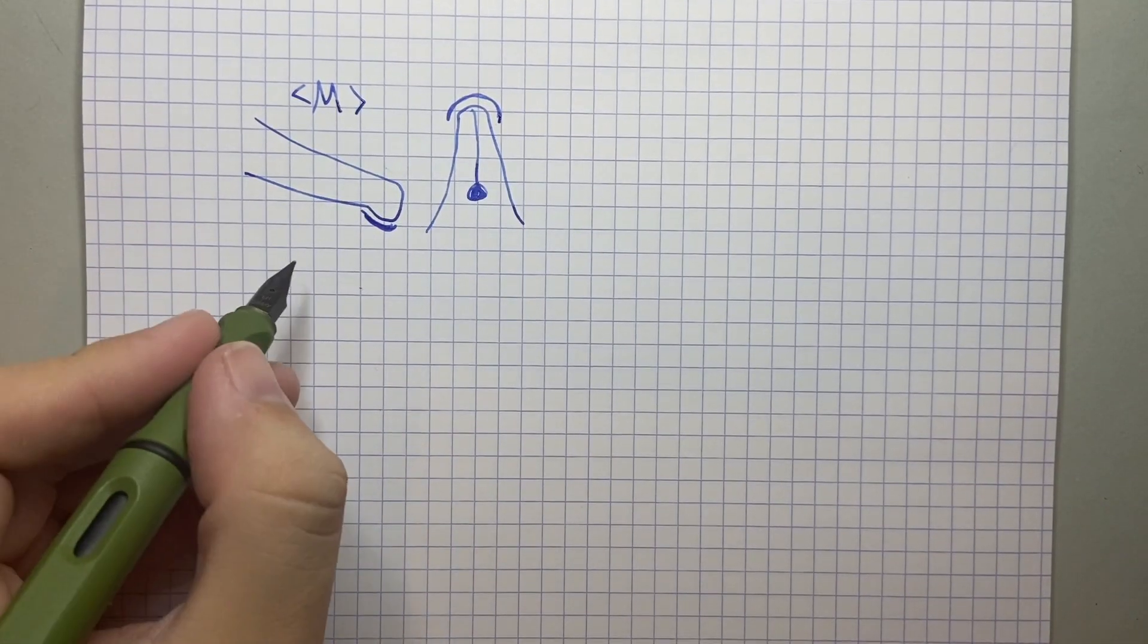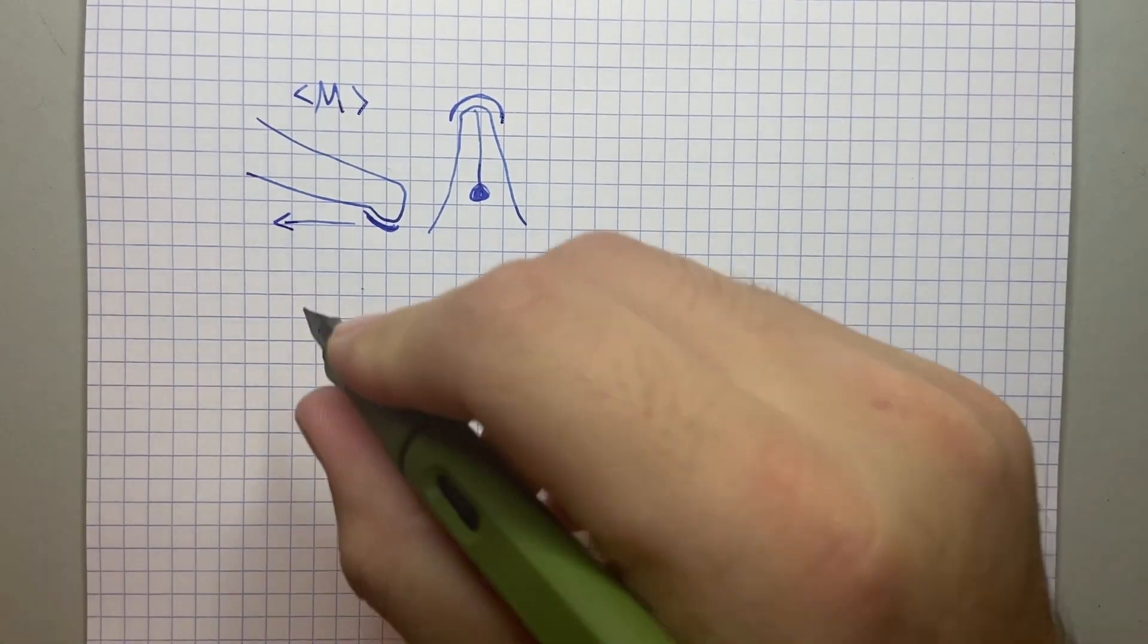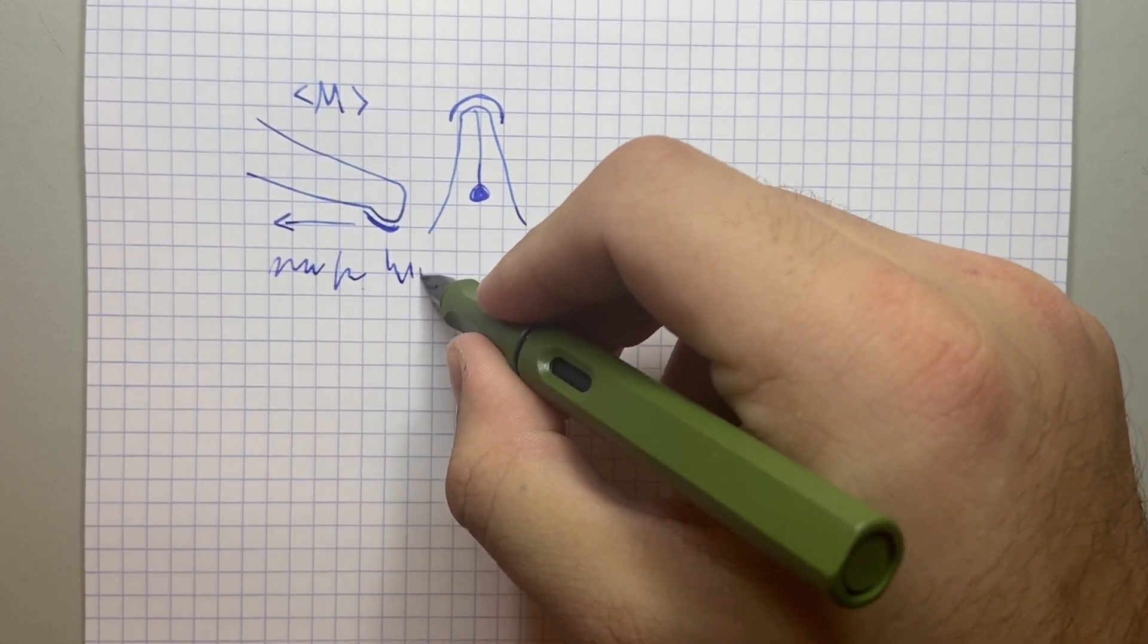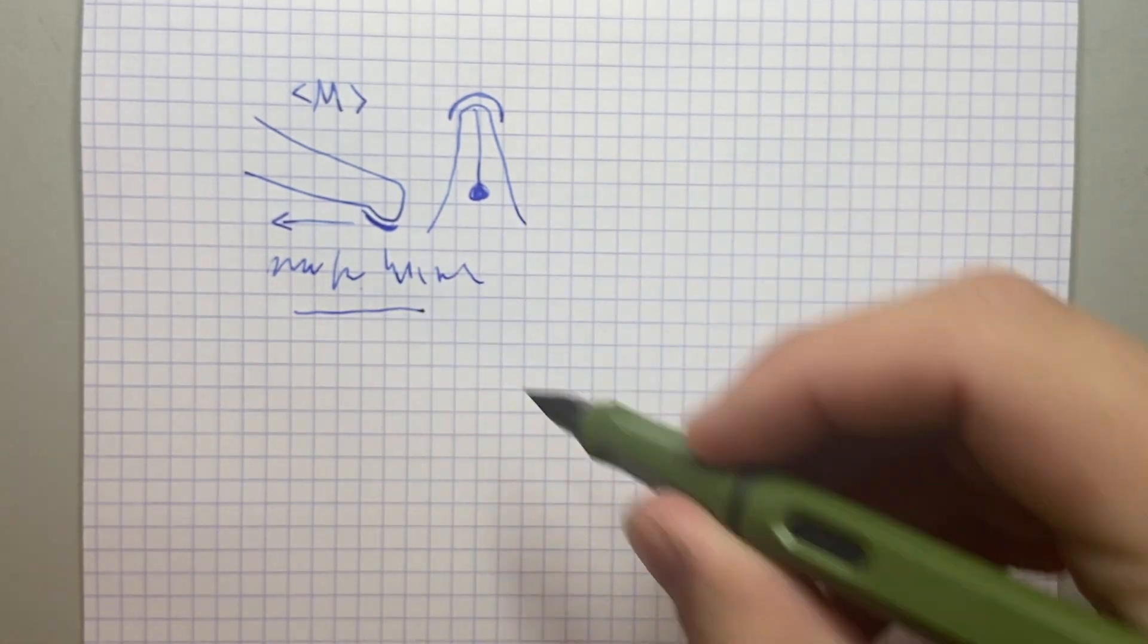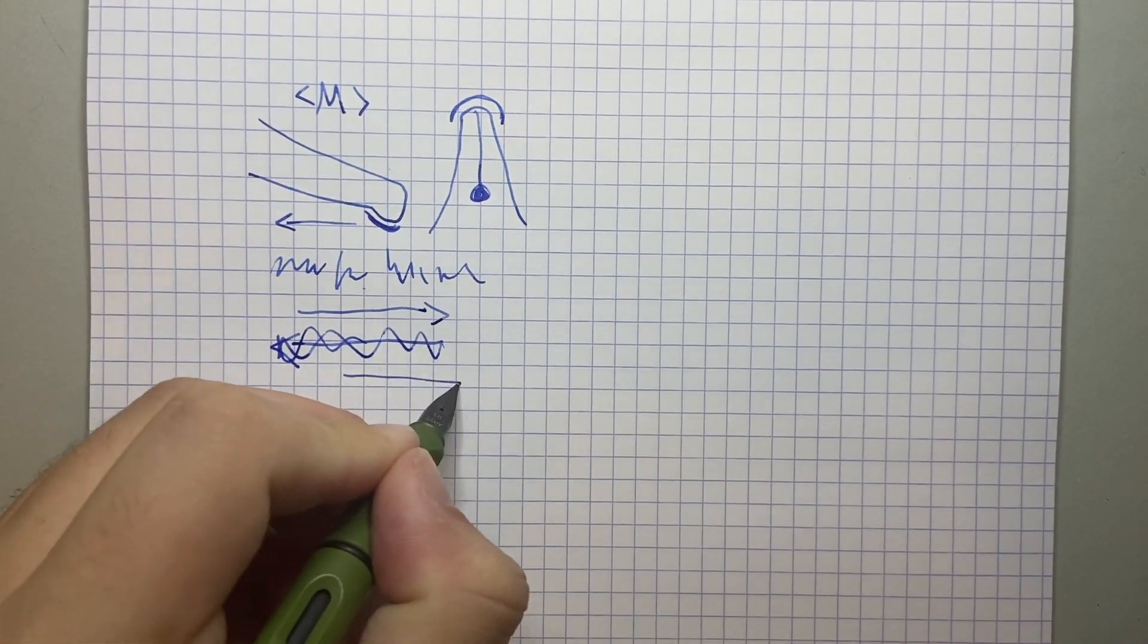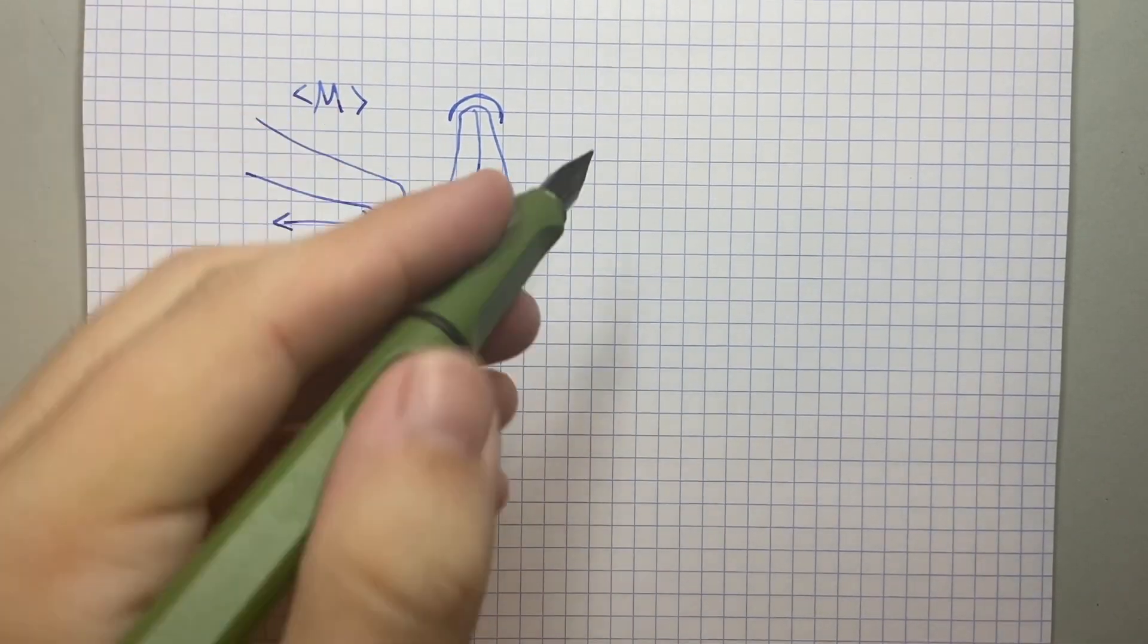So what that means is, a right-handed writer actually draws the pen across the page. So if I do a little right-handed sample just here, you can see I draw the nib across the page. It goes that way. Whereas a left-handed writer still goes in that direction, of course, we are pushing the nib across the page.